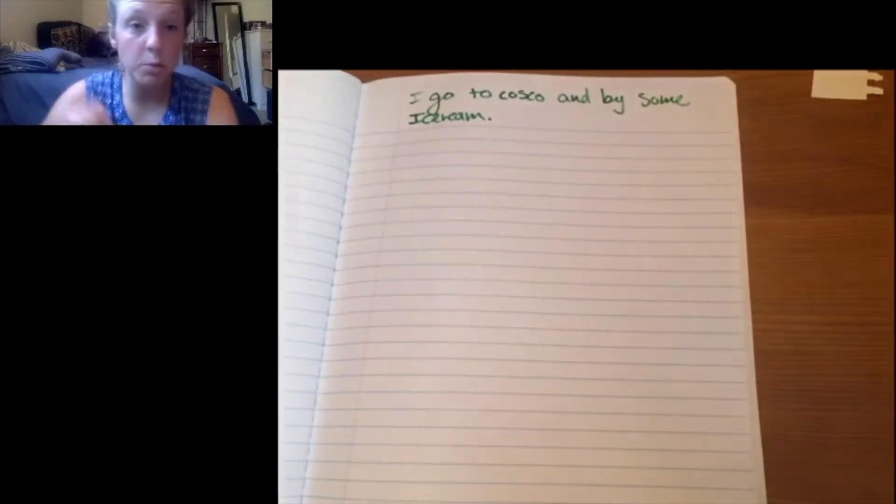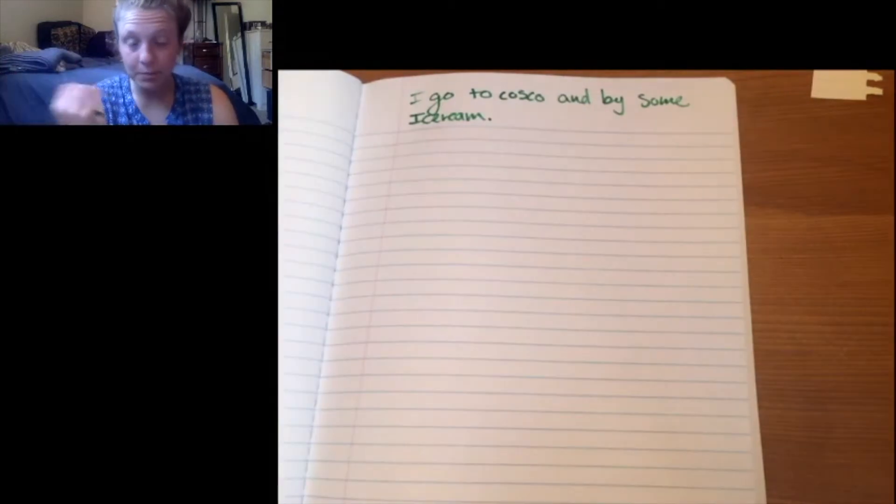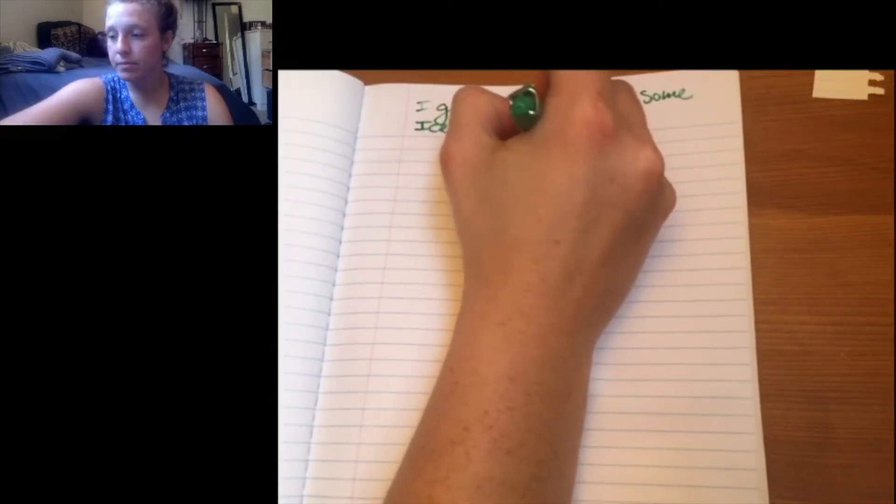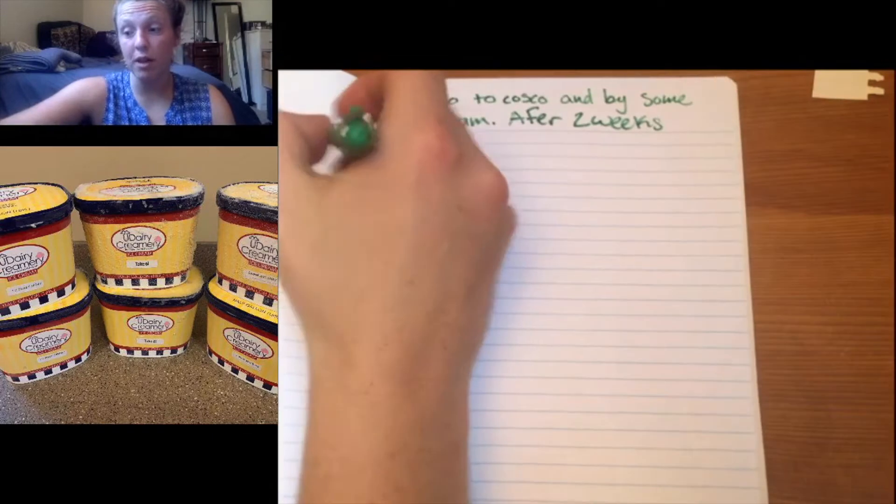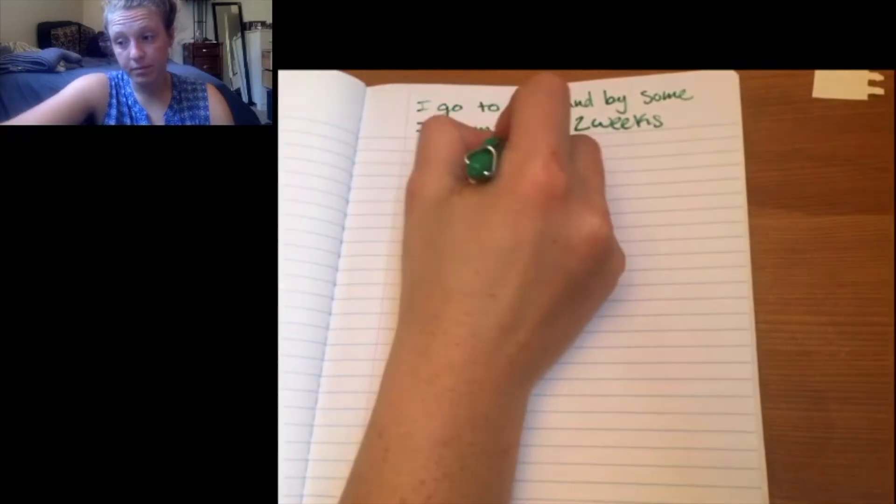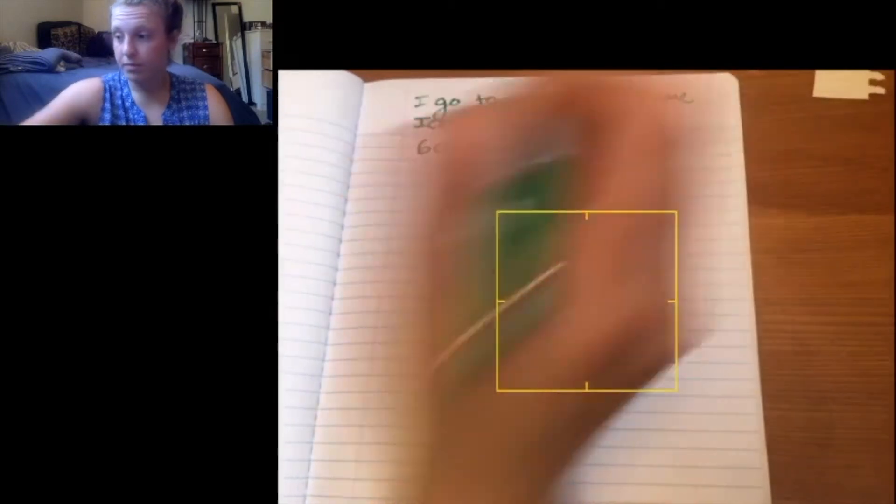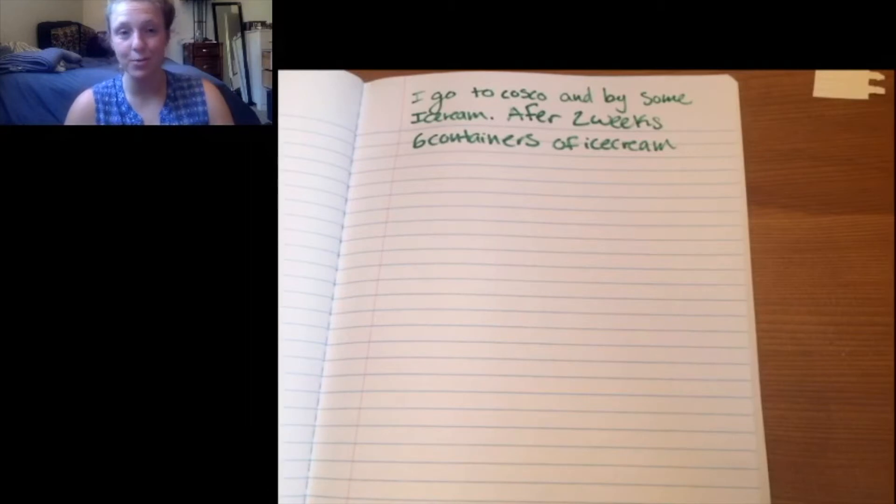And because it's quarantine, and we're not supposed to go outside a lot, I'm buying more than usual. And when I get home, I eat my ice cream. And two weeks in, I check how much ice cream I have. So after two weeks, I have six containers of ice cream left. Okay, that's still a lot of ice cream. I'm not worried at all that I'm gonna run out of ice cream.